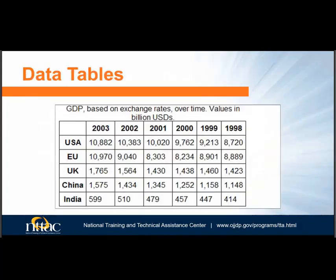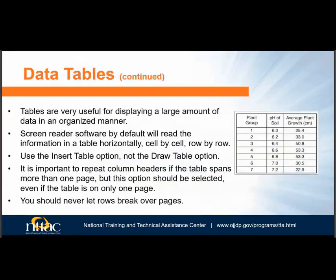So now let's focus on data tables. Data tables can be made accessible to blind people, but there are a few things that must be done in the source file. Note that it will need to be tweaked in the PDF once converted. The following slides will go into detail about getting your Word table Section 508 compliant. Note that if you use the draw table option, your table may not convert to an accessible table in PDF, so avoid using that option.